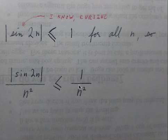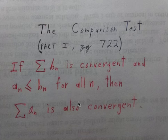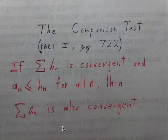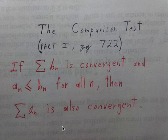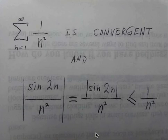I hope this looks familiar because we're going to use the comparison test for two different series. If Σb_n is convergent and a_n ≤ b_n for all n, then Σa_n is also convergent. And the caveat: both summations have to have positive terms, which we do.